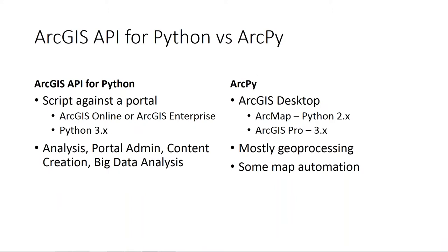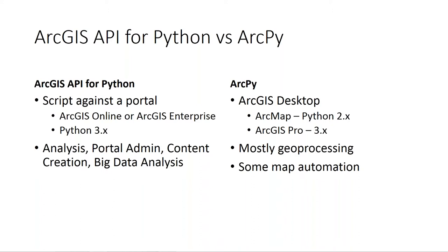ArcPy and the ArcGIS API for Python are two distinct areas — they both use Python but have different use cases. ArcPy is used with ArcGIS desktop to script geoprocessing or map automation workflows, supporting Python 2 in ArcMap and Python 3 in ArcGIS Pro. The ArcGIS API for Python is a newer API targeting ArcGIS Online or ArcGIS Enterprise — useful for analysis, portal administration, content creation, and big data analysis.